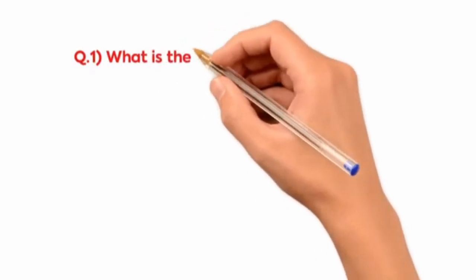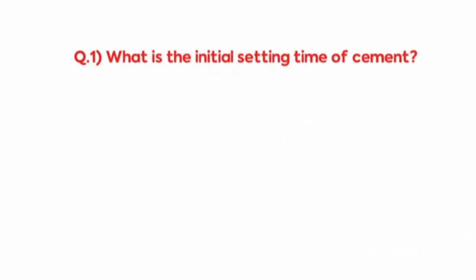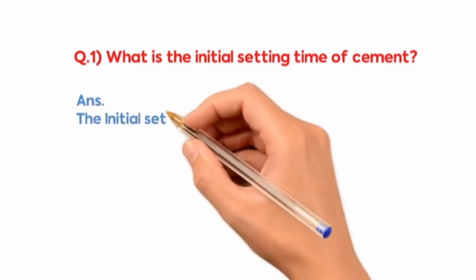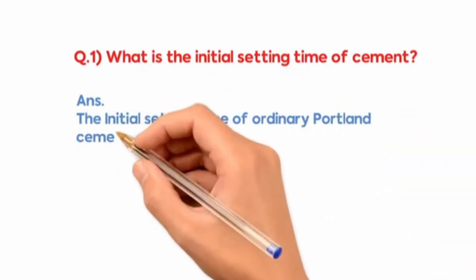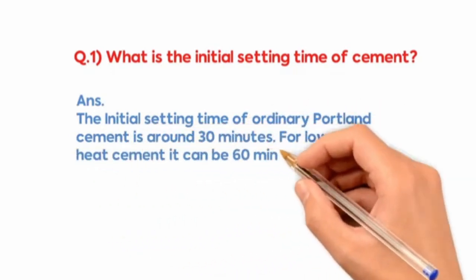What is the initial setting time of cement? The initial setting time of ordinary Portland cement is around 30 minutes. For low heat cement it can be 60 minutes.